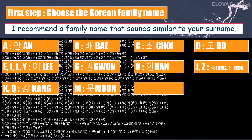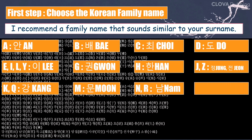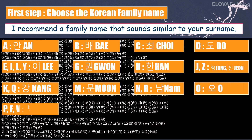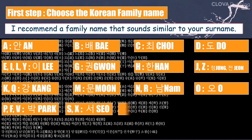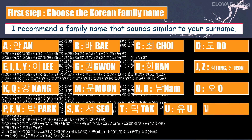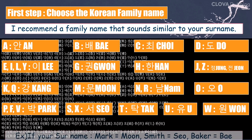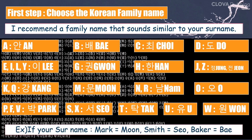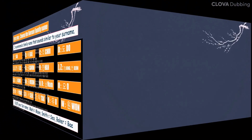M: Mun. N and R: Nam. O: O. P to V: Park. S and X: So. T: Park. U: U. W: Won. Look at the examples and choose carefully.